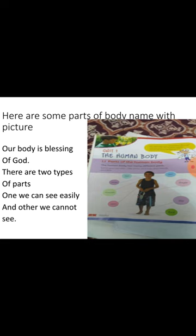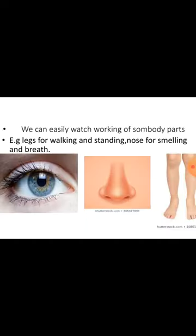The human body has many different parts. There are two types of parts: ones we can see easily and others we cannot see. We can easily watch the working of some body parts, for example legs for walking and standing, nose for smelling and breathing, eyes for seeing, and hands for gripping and writing.